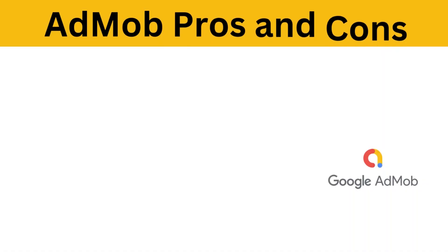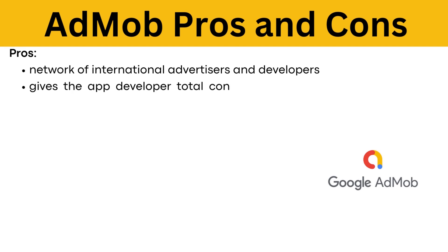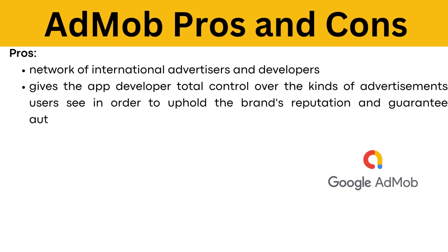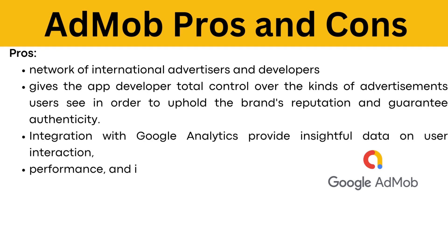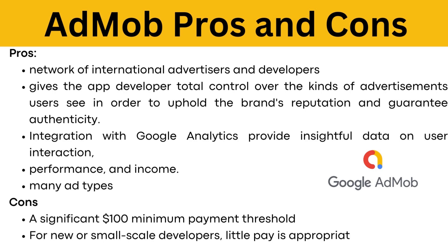The pros of AdMob include a network of international advertisers and developers, giving the app developer total control over the kinds of advertisements users see to uphold the brand's reputation and guarantee authenticity. Integration with Google Analytics provides insightful data on user interaction, performance, and income in many ad types. The cons of AdMob include a significant $100 minimum payout threshold, and for new or small-scale developers, little pay is appropriate.